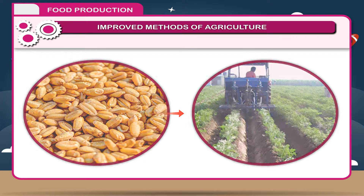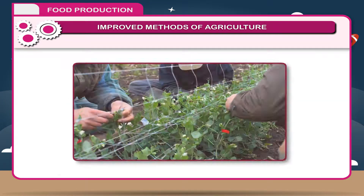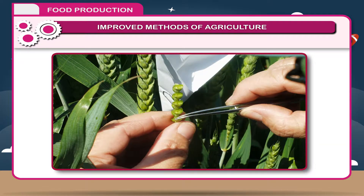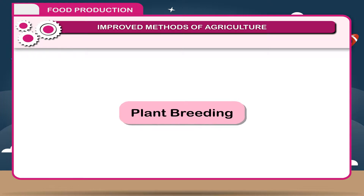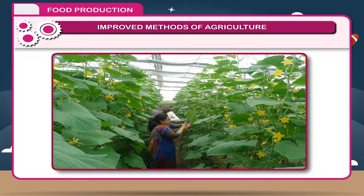These are improved varieties of seeds. Improved seed variety is one of the most important agricultural practices to increase the yield. This is done by plant breeding. Plant breeding is the practical application of genetic principles to the development of improved agriculture and horticultural crops.